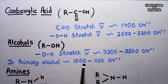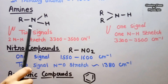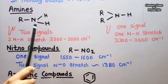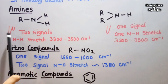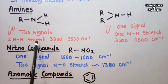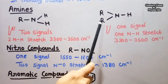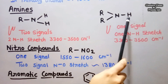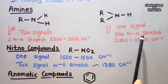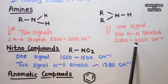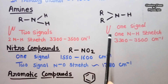In amines where an NH₂ group is present, we get N-H stretching frequencies. In primary amines with two N-H bonds, we get two signals for the two N-H stretching frequencies near 3,300 to 3,500 cm⁻¹. In secondary amines with only one N-H bond, we get only one signal near 3,300 to 3,500 cm⁻¹. So primary amines give two signals while secondary amines give only one signal.